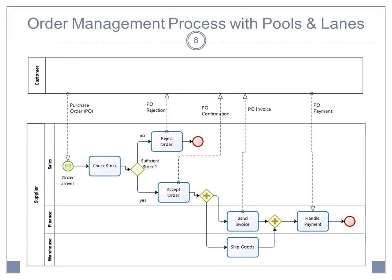Here you see our order management process supplemented with pools and lanes and messages. So first of all, you see on the supplier's side that you have the pool that has been divided into three departments: warehouse, finance and sales, and this allows to distribute the tasks across the different departments in the organization of the supplier. So you see that check stock, reject order and accept order are done by sales, send invoice and handle payment are done by finance, and ship goods is done in the warehouse.